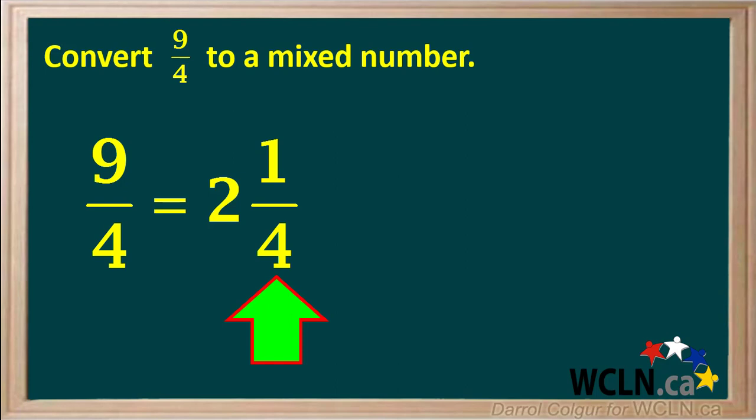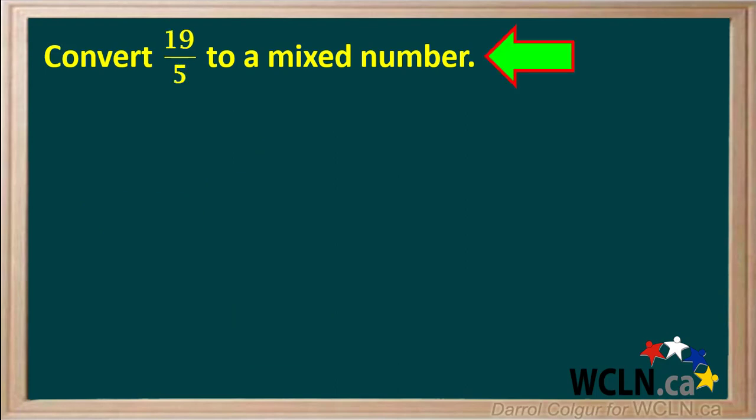Let's try another example. We're asked to convert the improper fraction 19 over 5 to a mixed number. At this point, pause the video and try converting this to a mixed number on your own. Then resume the video to check your answer.